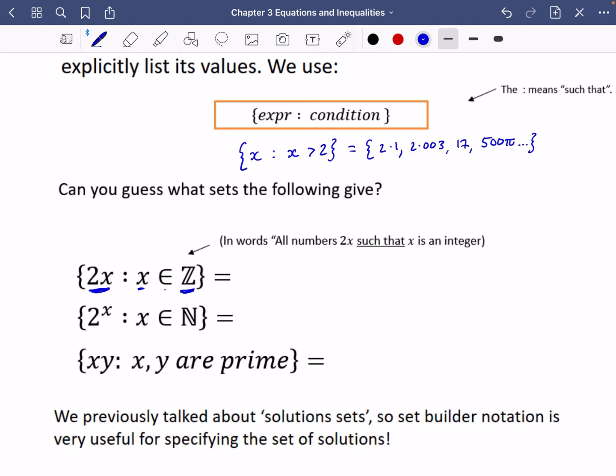So all numbers 2x such that x is an integer. Well, if x is an integer and you're then doubling it to get this initial expression, I guess we could get things like, let's say that x was minus three. Well, when you double it, you'd get minus six. You could have if it was minus two, and you'd get minus four, you'd have minus two, zero, two, four, six, eight, etc. In other words, that is the even numbers.